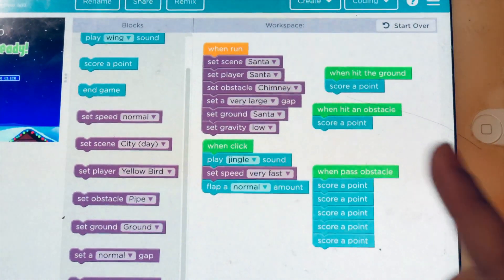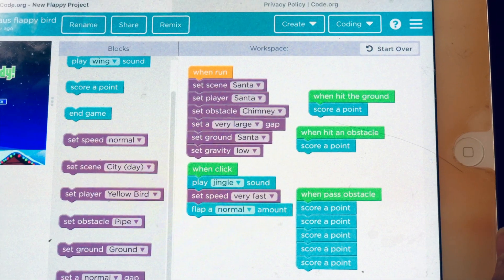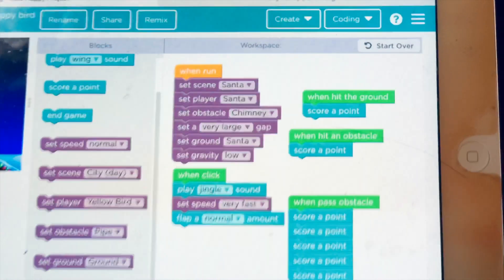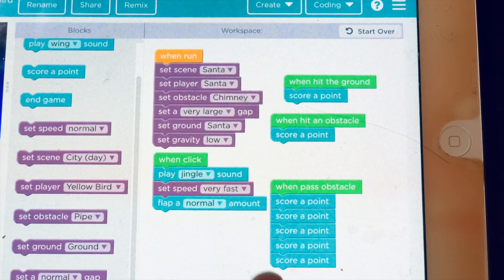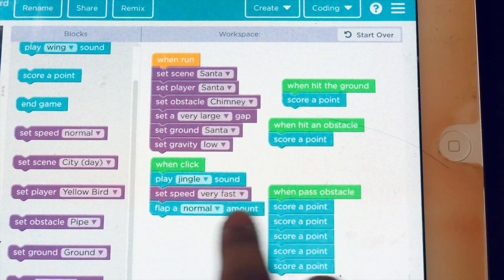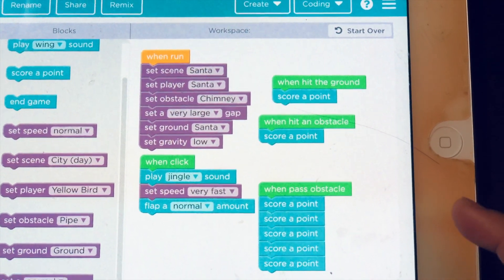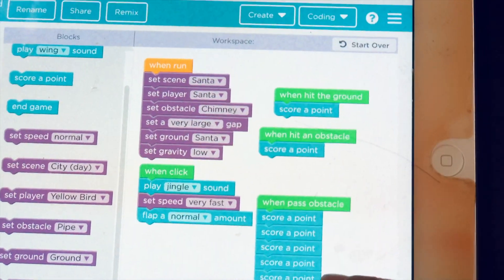The yellowish-orange and the green blocks you can't delete because they're important. For when click, you have to add set speed and flap so you can control it.